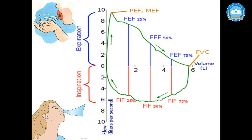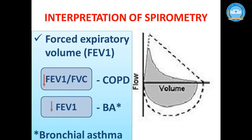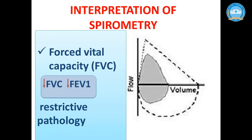In obstructive disease, we see a decrease in forced expiratory volume at the first second (FEV1). In restrictive disease, we see a decrease in forced vital capacity (FVC).